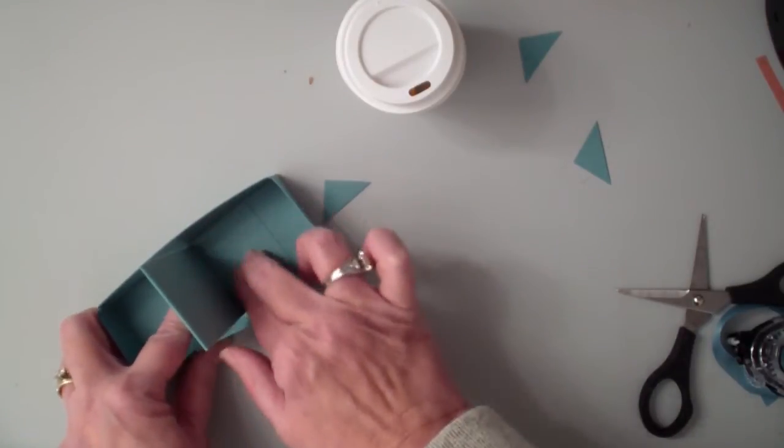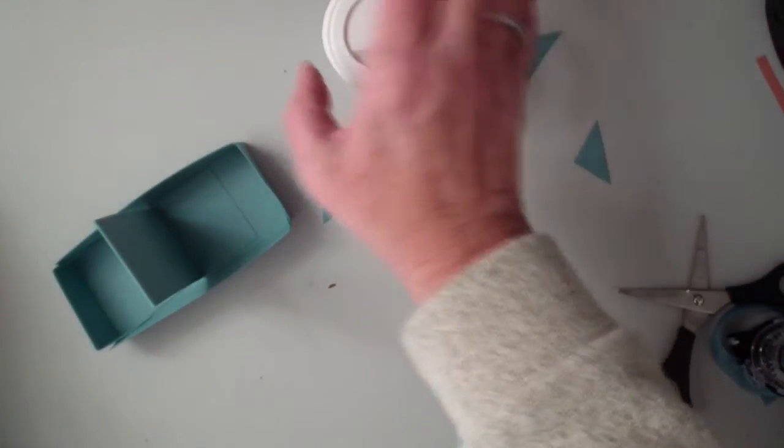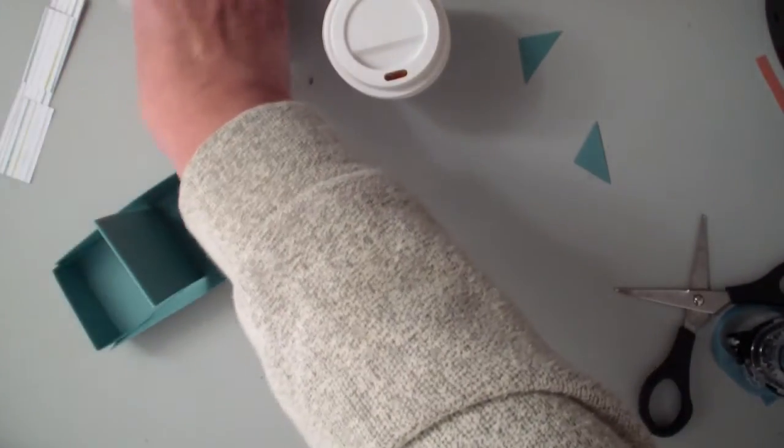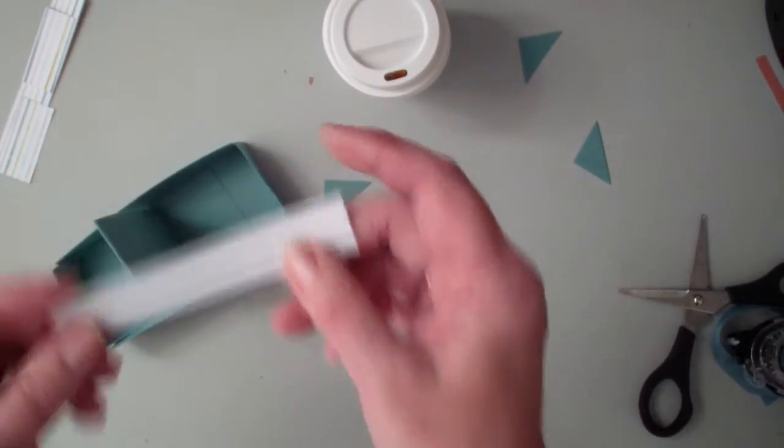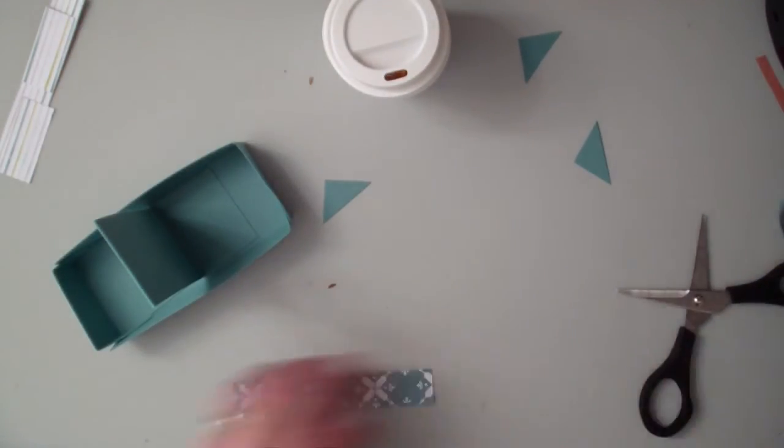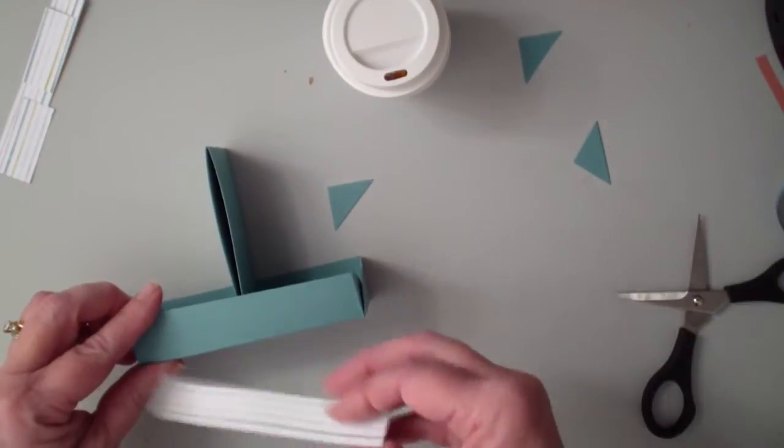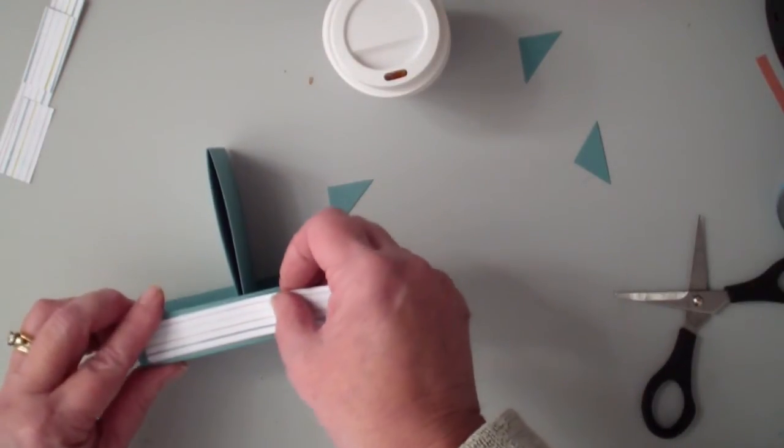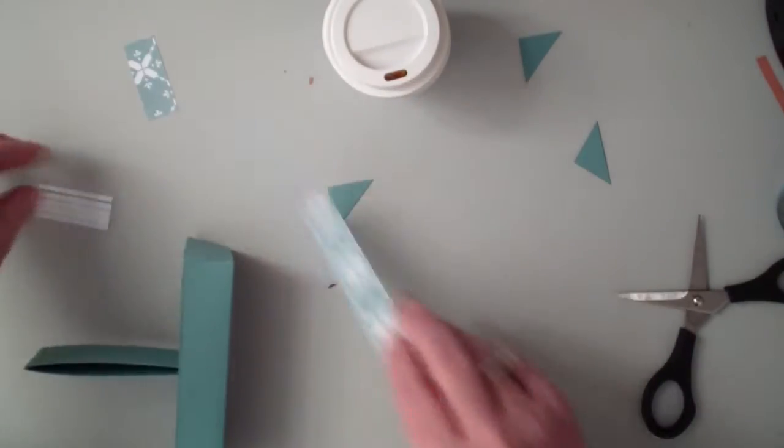Then I have taken designer series paper. I've used the all is calm like I used for the cups. I cut two pieces that are ¾ inch by 4½. That is going to go on the front of the box and on the back opposite side.